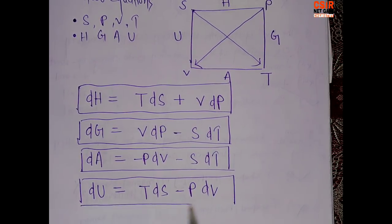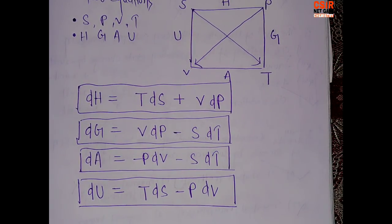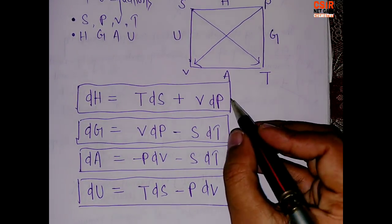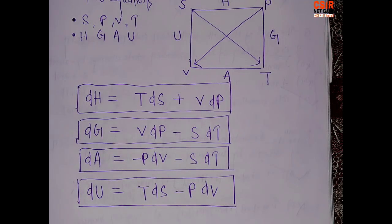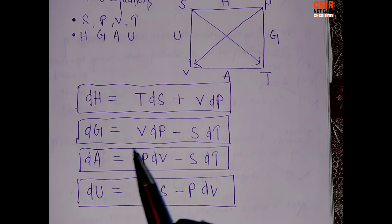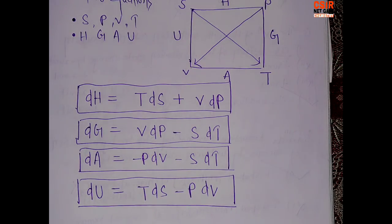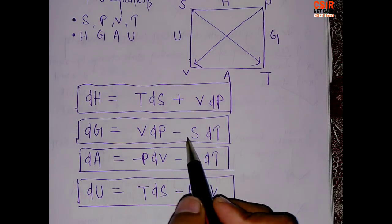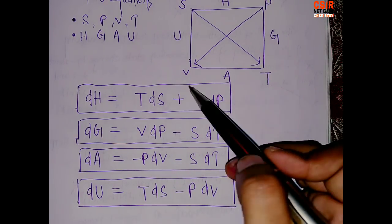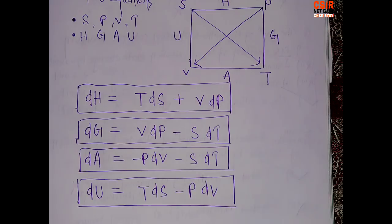So basically these are the four thermodynamic equations: dH = T dS + V dP, dG = V dP − S dT, dA = −P dV − S dT, and dU = T dS − P dV. These are very important — you must know how to write them because from these the Maxwell equations are derived. Be very careful about the signs.